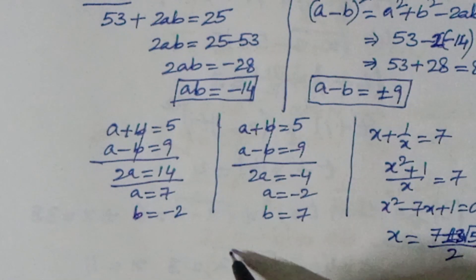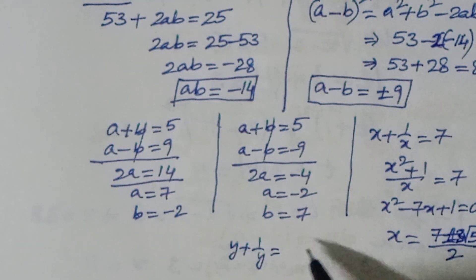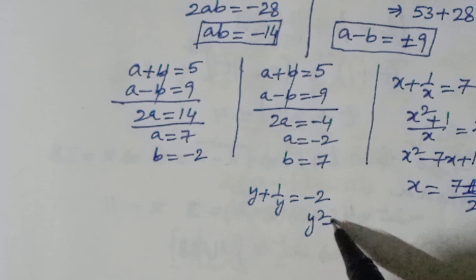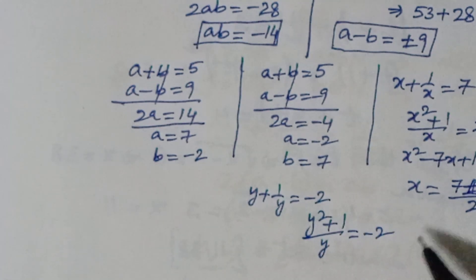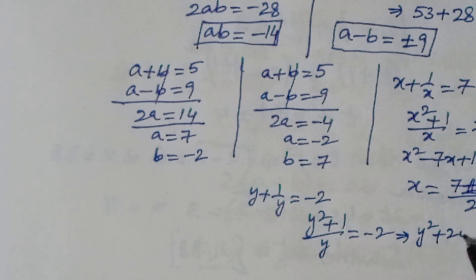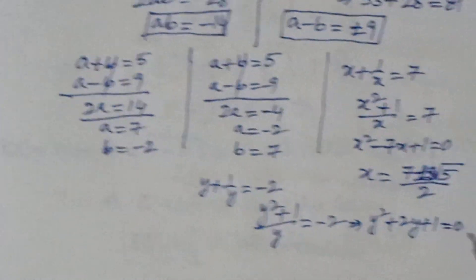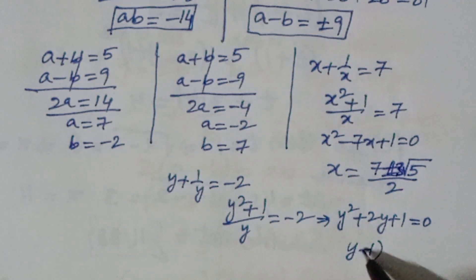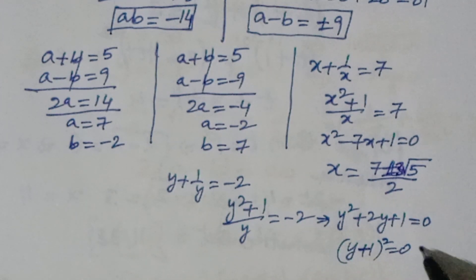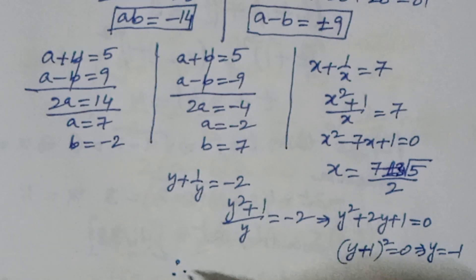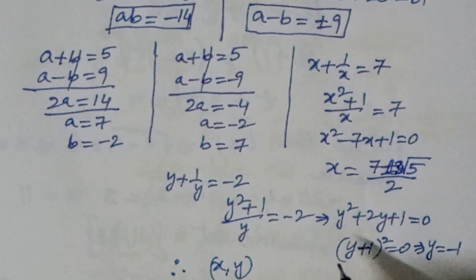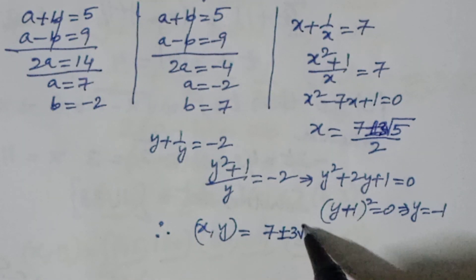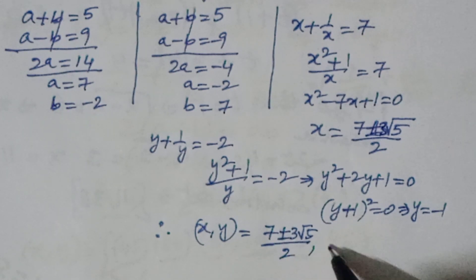For y + 1/y = b = -2: multiplying through gives y² + 2y + 1 = 0, which factors as (y + 1)² = 0, so y = -1. Therefore the solution is x = (7 ± 3√5)/2, y = -1.